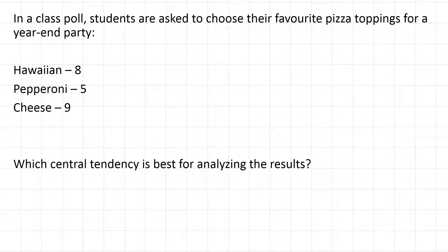In a class poll, students are asked to choose their favorite pizza toppings for a year-end party. Eight students choose Hawaiian, five choose pepperoni, and nine choose cheese pizza. Which central tendency is the best?